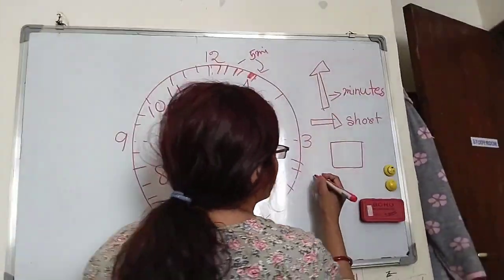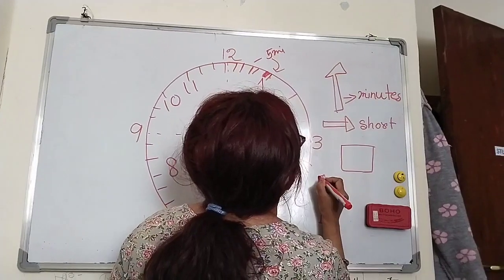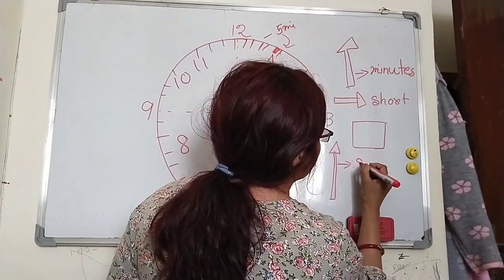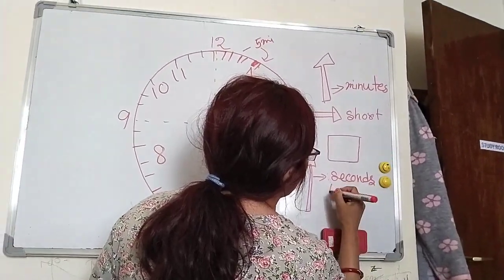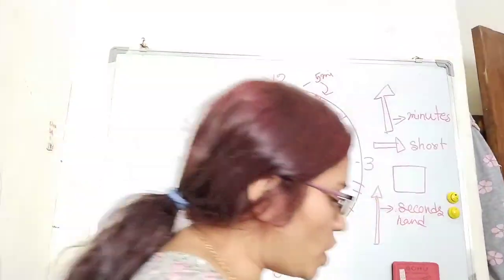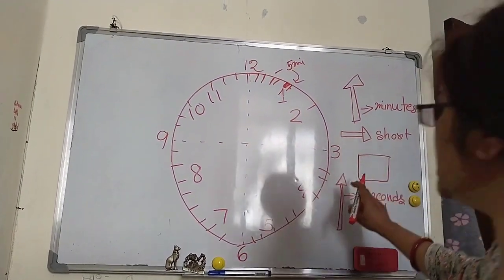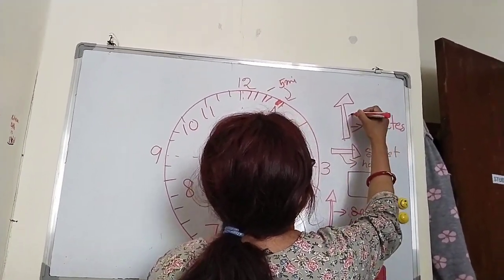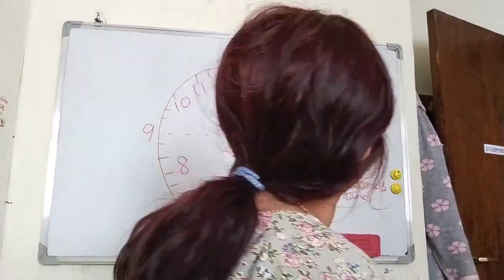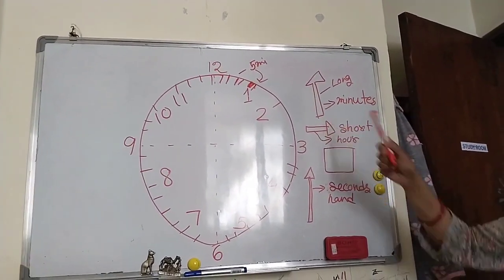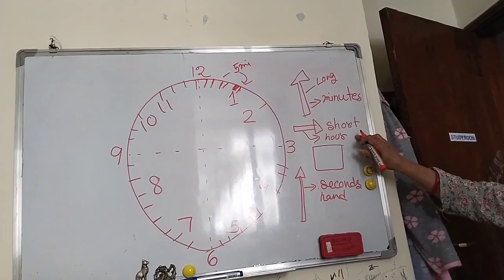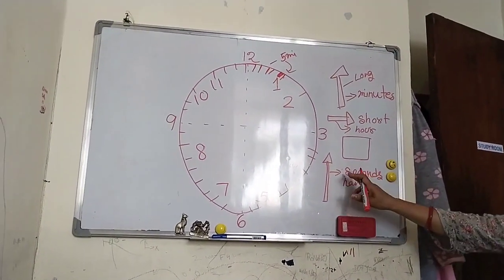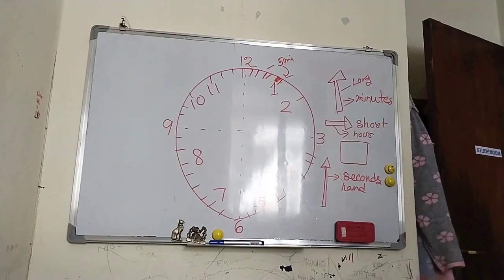And there is one thin hand, thin like this. What is the third hand's name? It is the second's hand. So: long hand means minute's hand, short hand means hour hand, and the thin hand is the second hand. Long hand means minute's hand, short hand means hour hand.